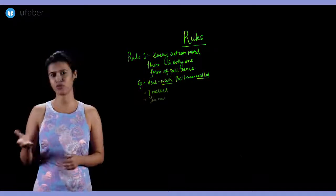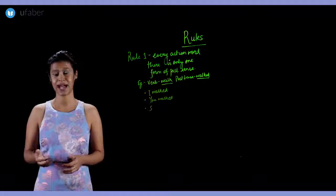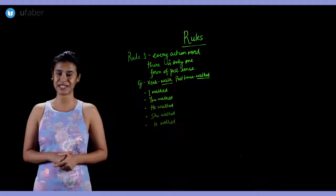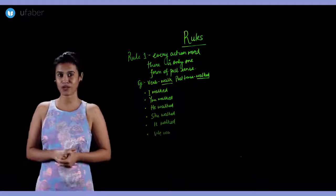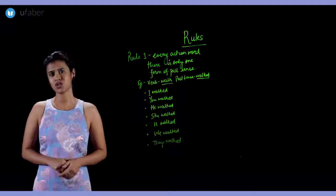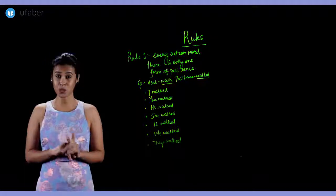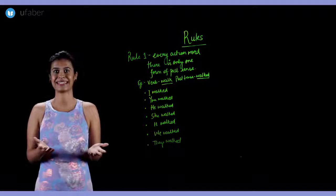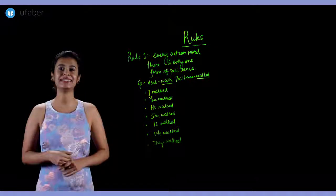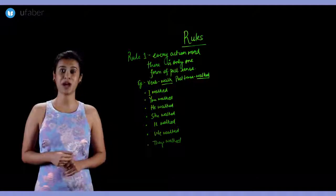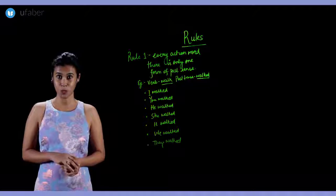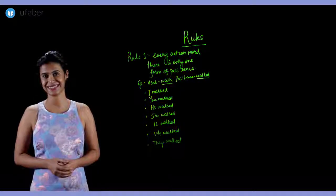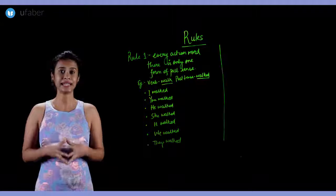I walked, you walked, he walked, she walked, it walked, we walked, they walked. So you just have to learn one word to be able to use it in the past tense. In this case, we just needed to learn the one word 'walked', which can be used for all subjects.